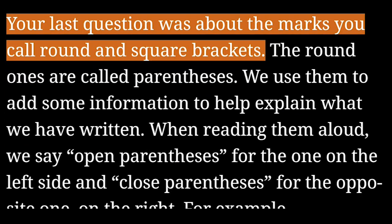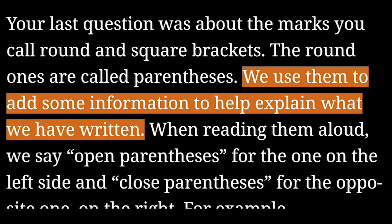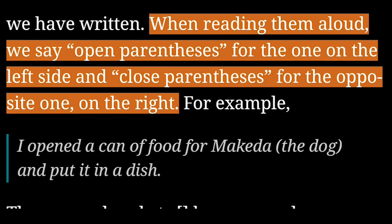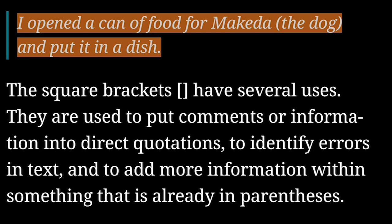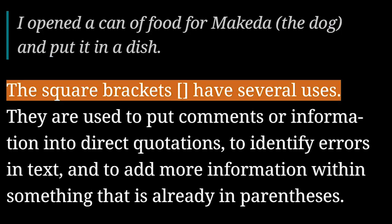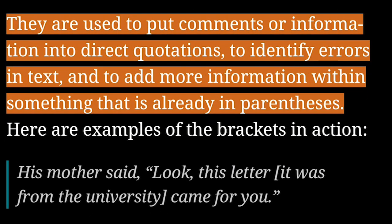Your last question was about the marks you call round and square brackets. The round ones are called parentheses. We use them to add some information to help explain what we have written. When reading them aloud, we say 'open parentheses' for the one on the left side and 'close parentheses' for the opposite one on the right. The square brackets have several uses: they are used to put comments or information into direct quotations, to identify errors in text, and to add more information within something that is already in parentheses.